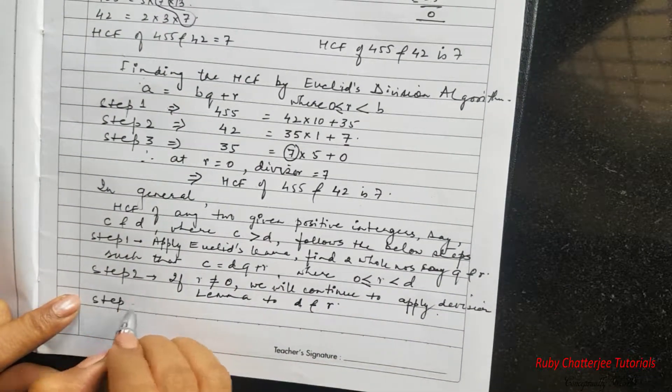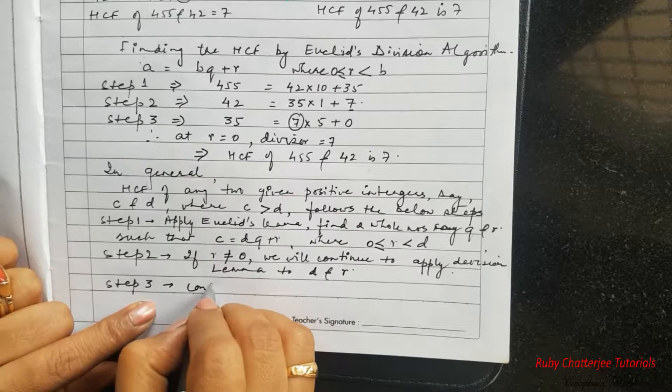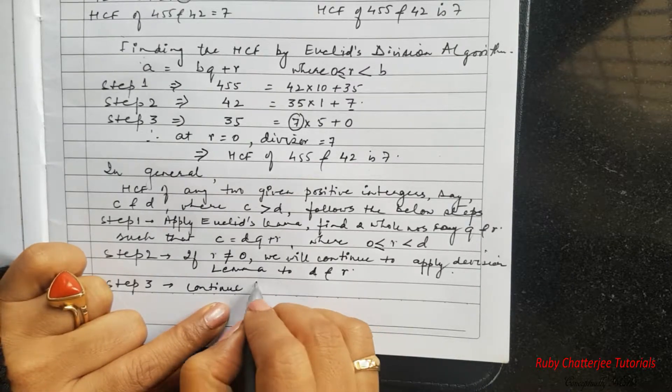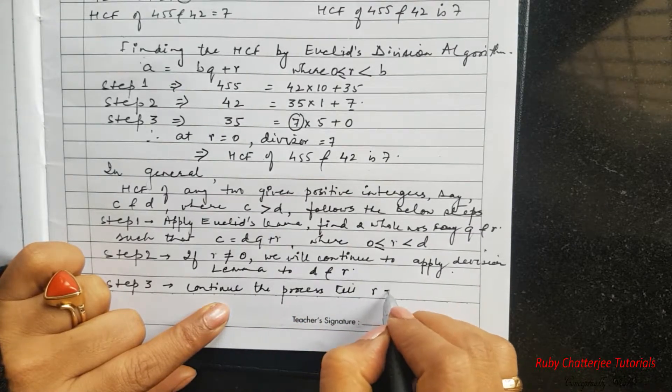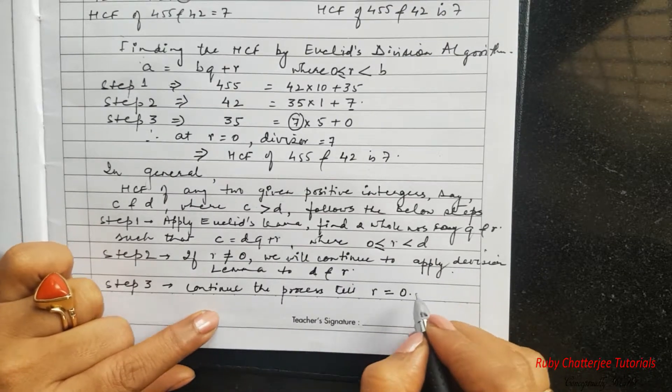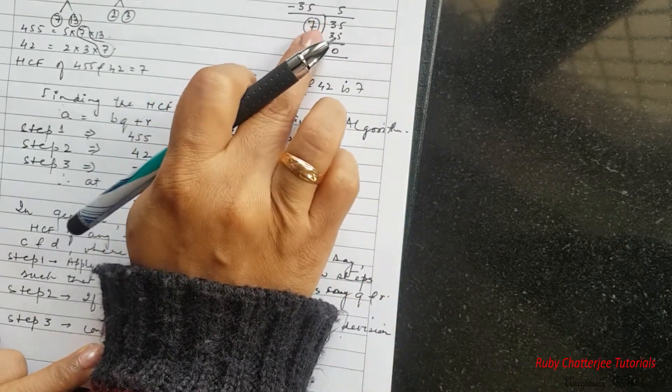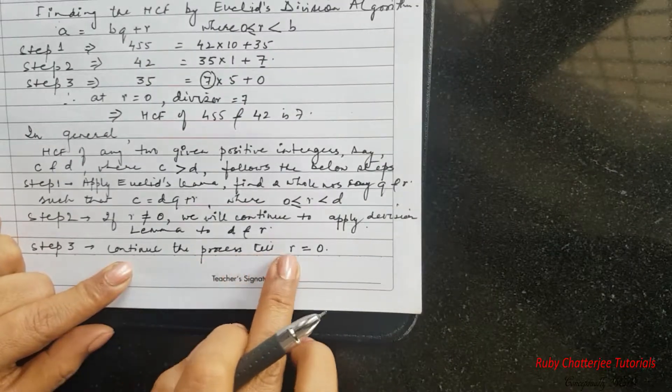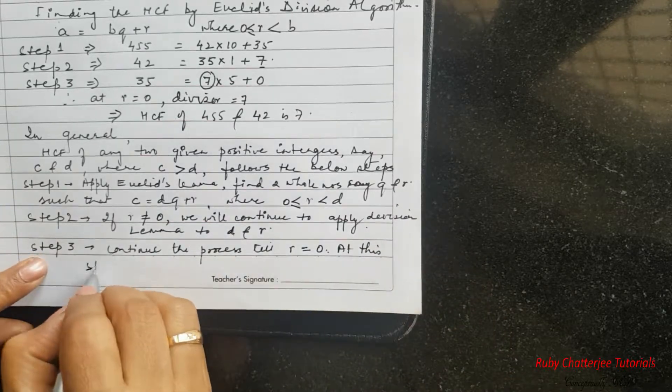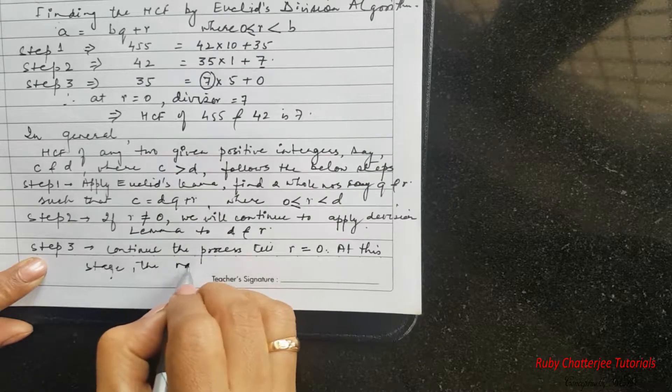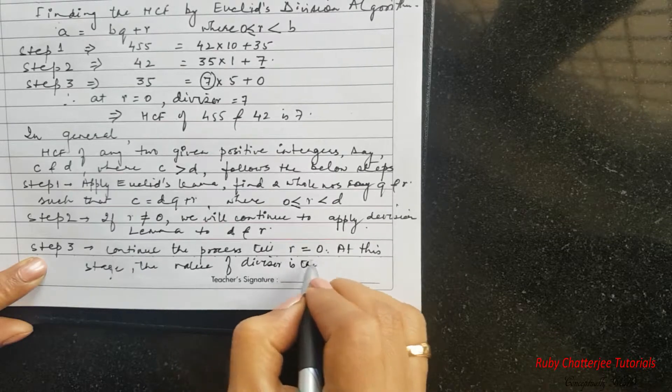And how long are we going to continue? Till the time we get the remainder to be 0. So continue the process till remainder is equal to 0. At this point when the remainder is 0, the value of the divisor is your HCF. So continue the process till remainder is 0, at this stage the value of divisor is the HCF.